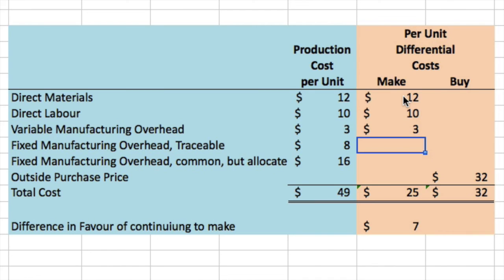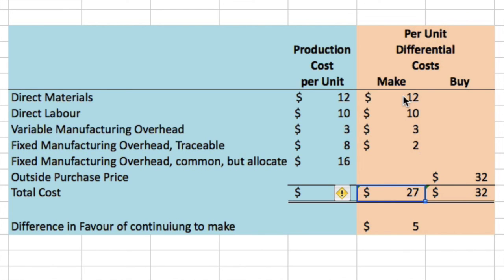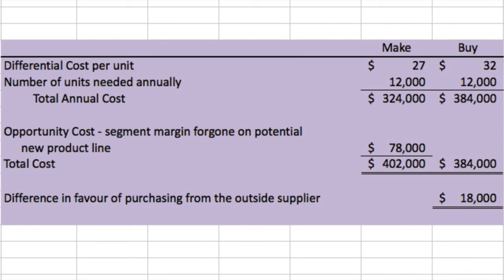For the fixed manufacturing overhead traceable at $8: if we buy from outside, $2 of supervisory salaries can be avoided, but $6 for depreciation on equipment we can't get rid of — so only $2 can be avoided. The fixed manufacturing overhead that is common but allocated — nothing we can do about that $16 per unit. So we'd pay $32 to an outside supplier, but that only eliminates $27 per unit of our own costs. The difference is $5 in favor of continuing to make.